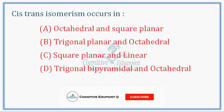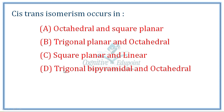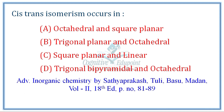Next question on isomerism: cis-trans isomerism occurs in which geometries? Different geometries include octahedral, square planar, trigonal planar, linear, and trigonal bipyramidal. Cis-trans isomerism is usually exhibited by square planar complexes and octahedral complexes — at least of the MA4B2 type. The correct answer is A.